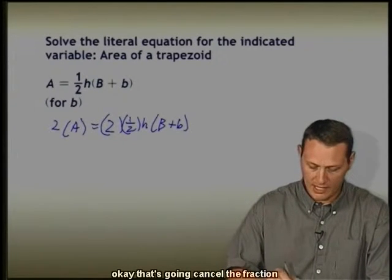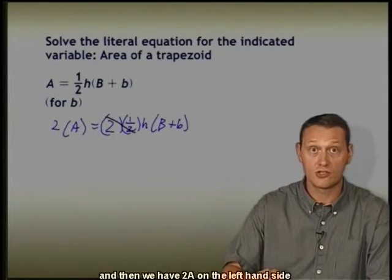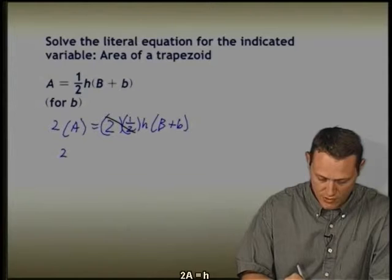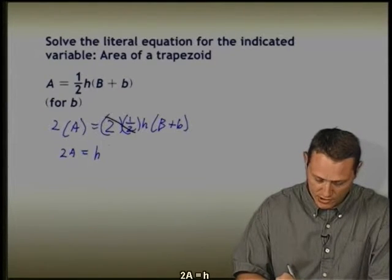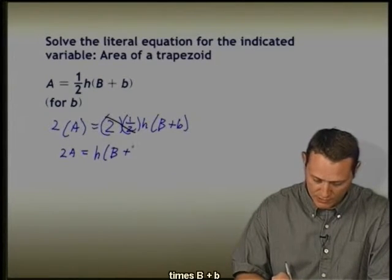That's going to cancel the fraction. We have 2A on the left-hand side, so 2A equals h times capital B plus small b.